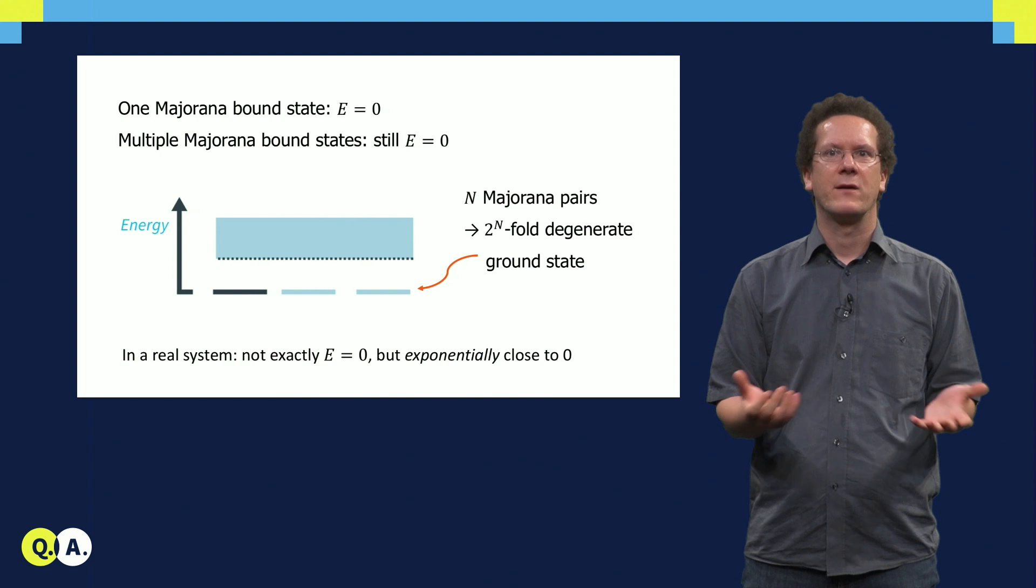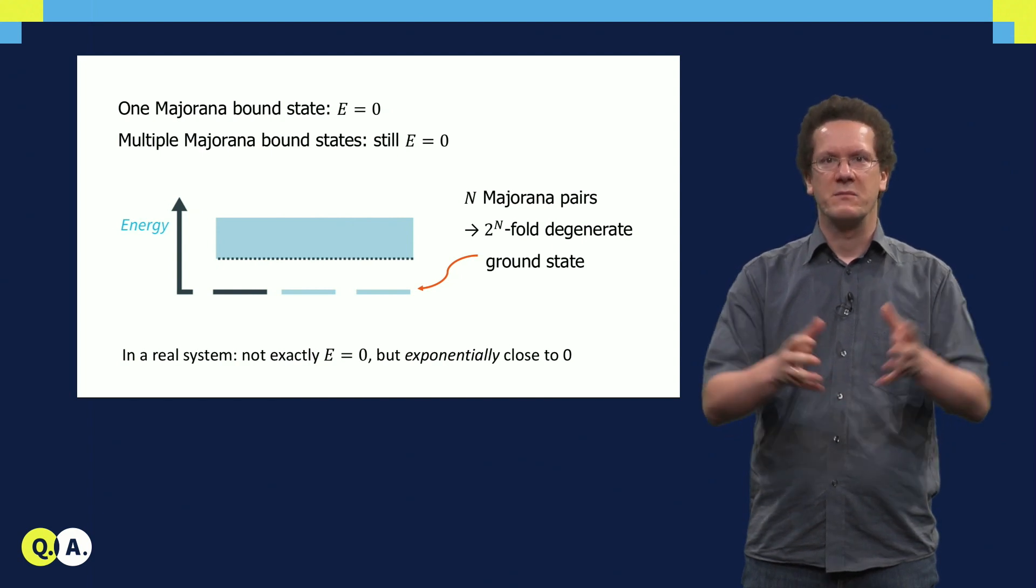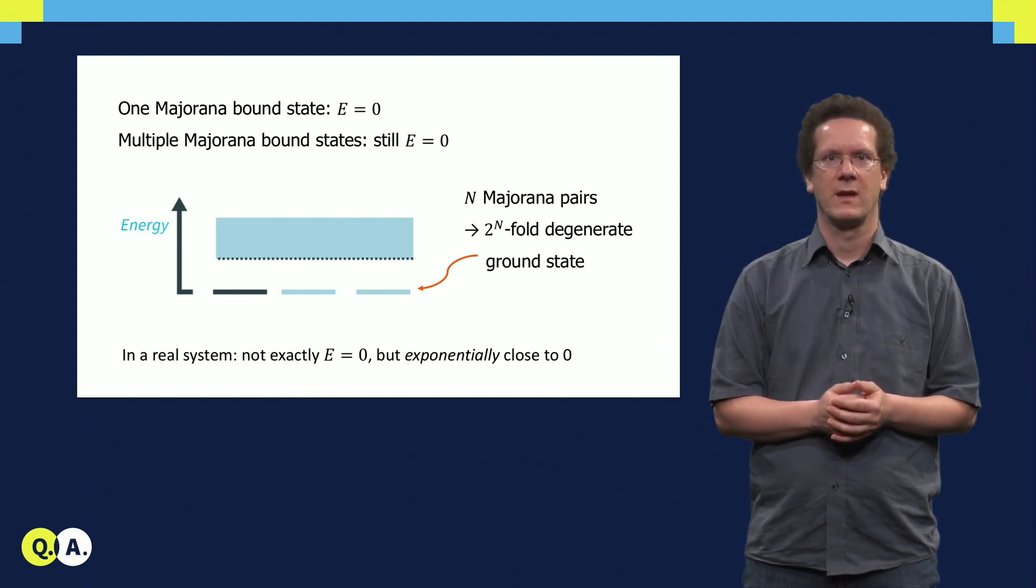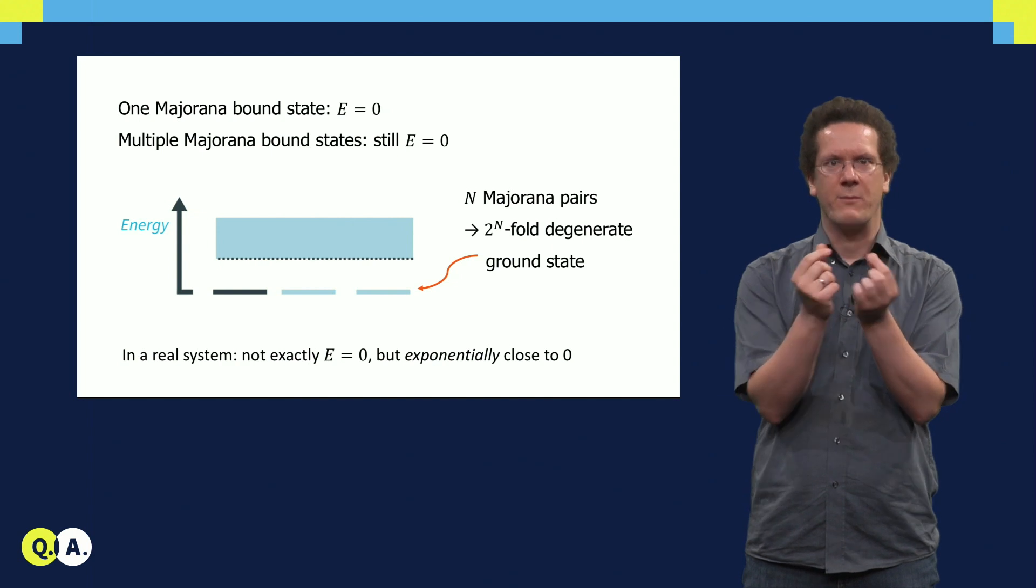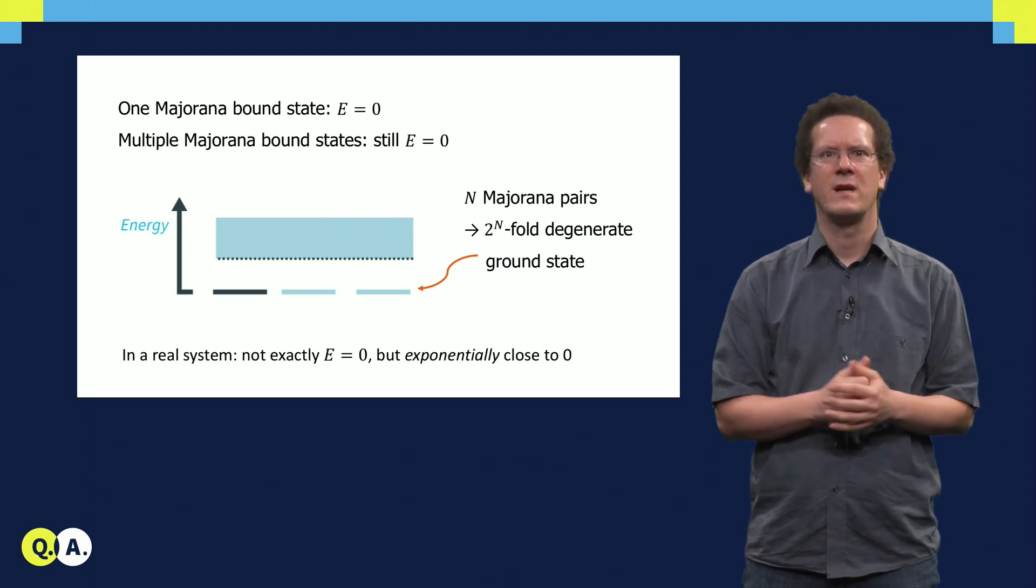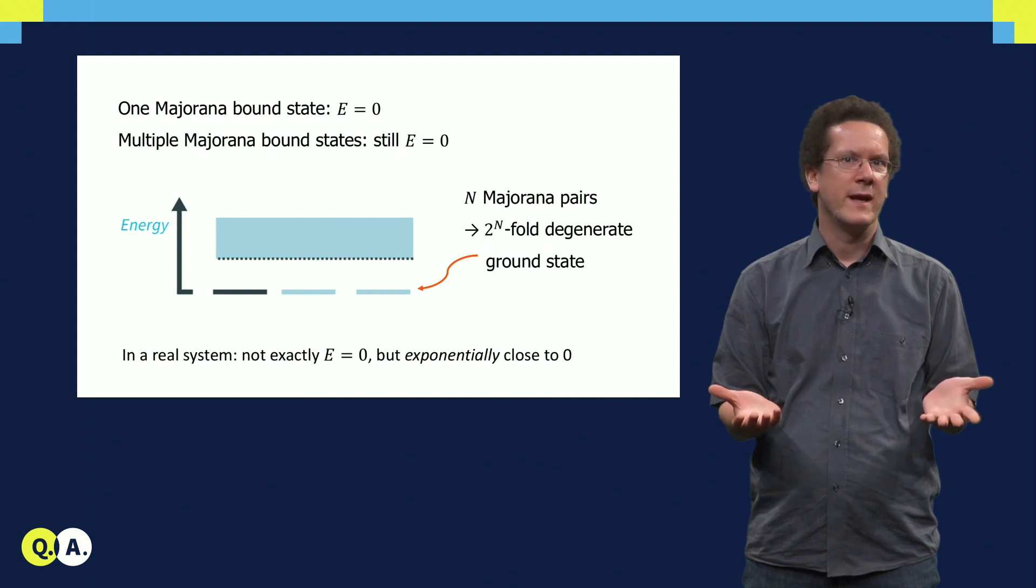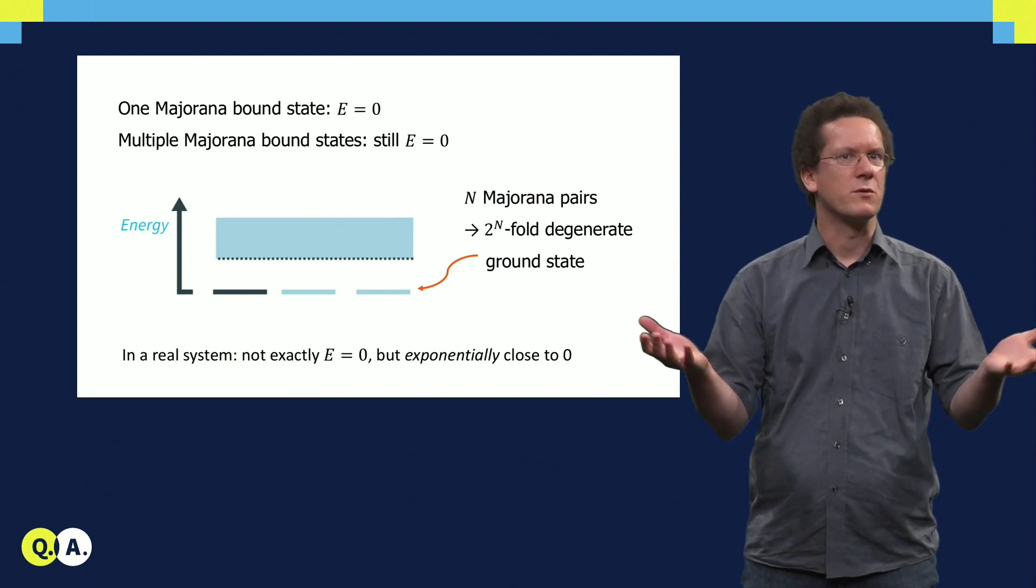In reality, we cannot separate the Majorana bound states infinitely far from each other. Hence, there is a small overlap left over. But this overlap is exponentially small, so the states will be exponentially close to zero energy, which is good enough.